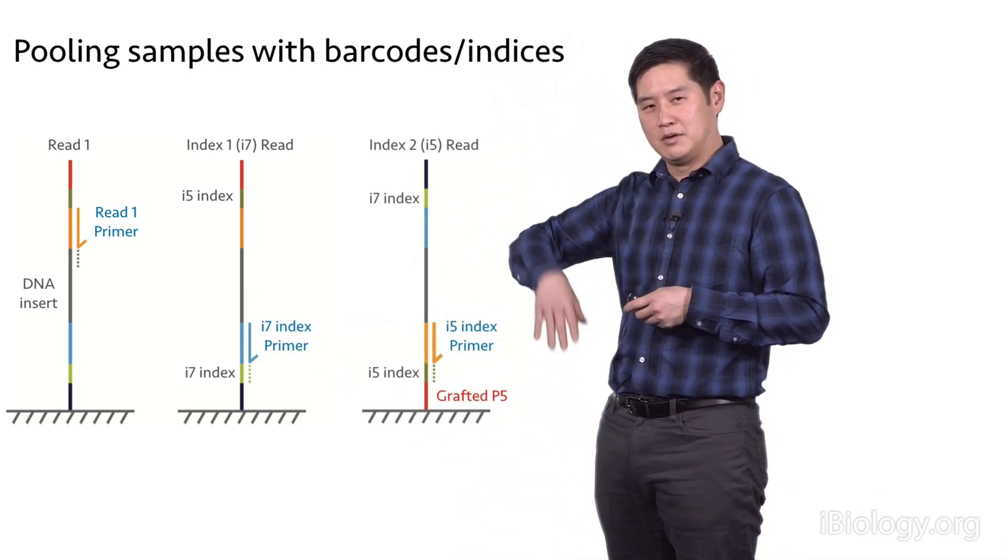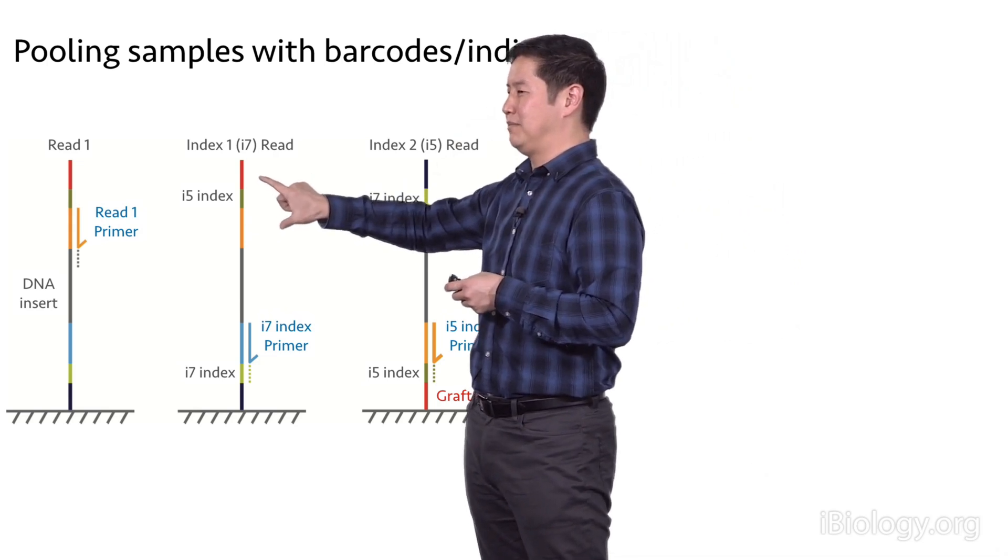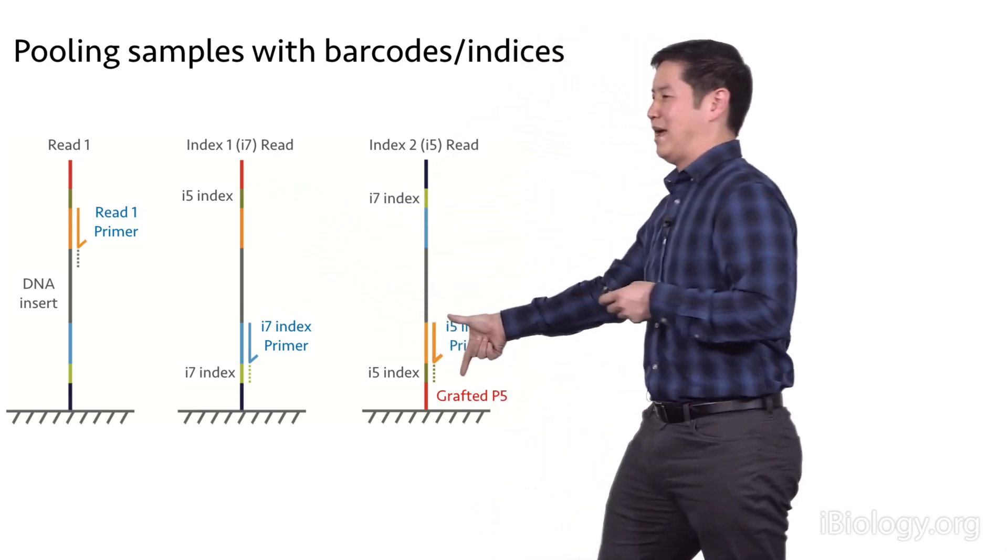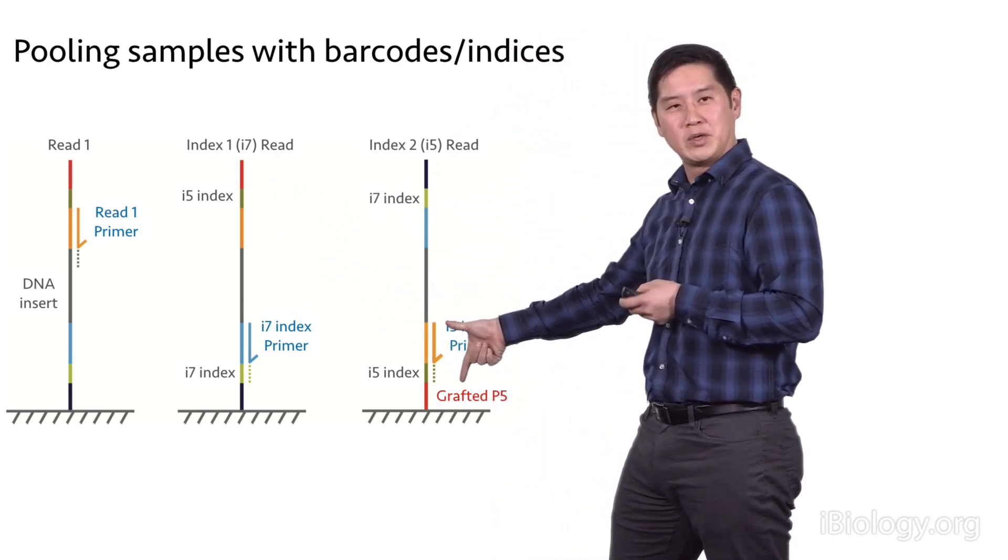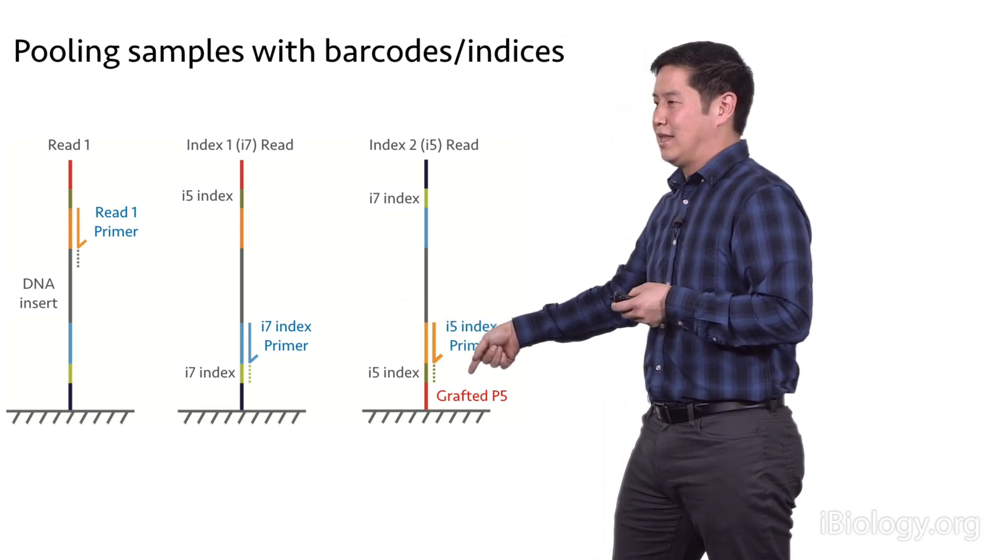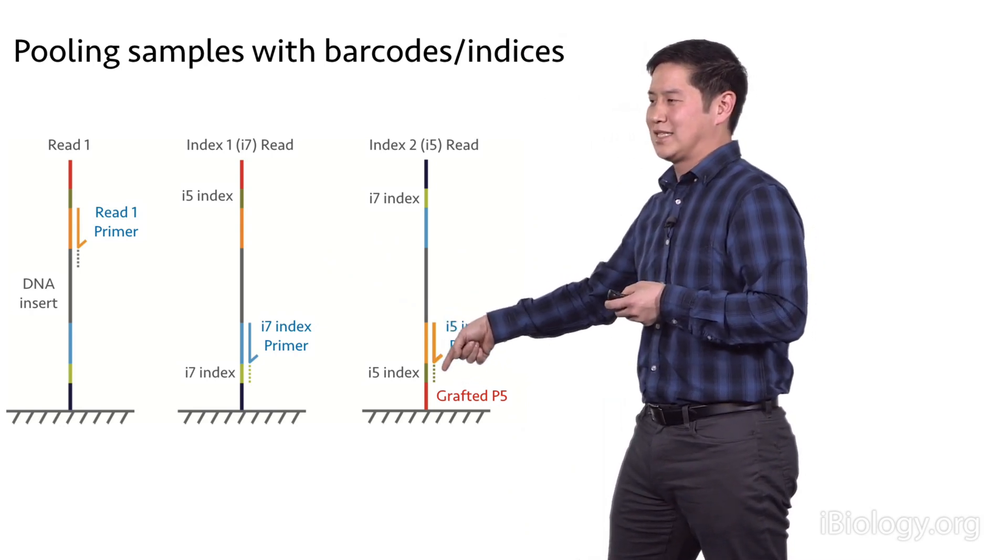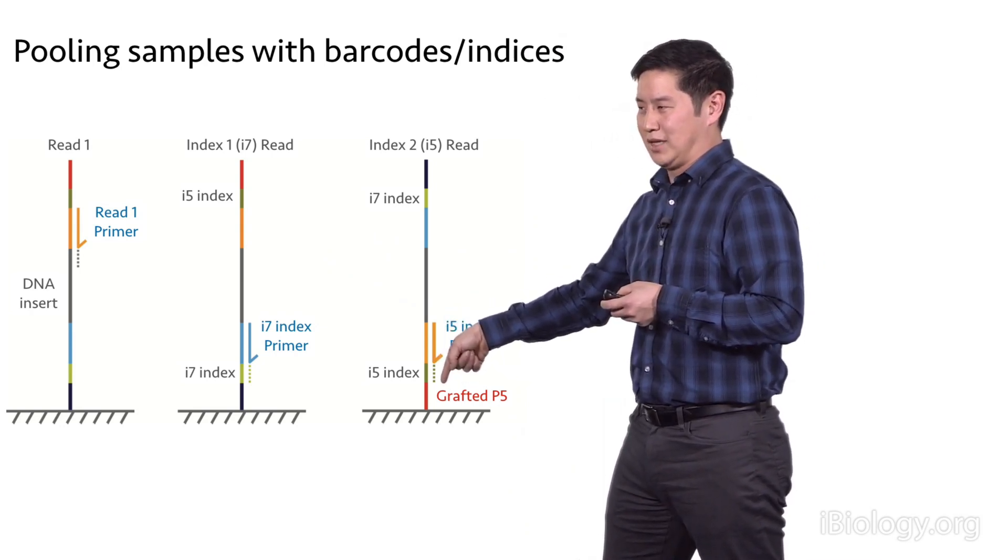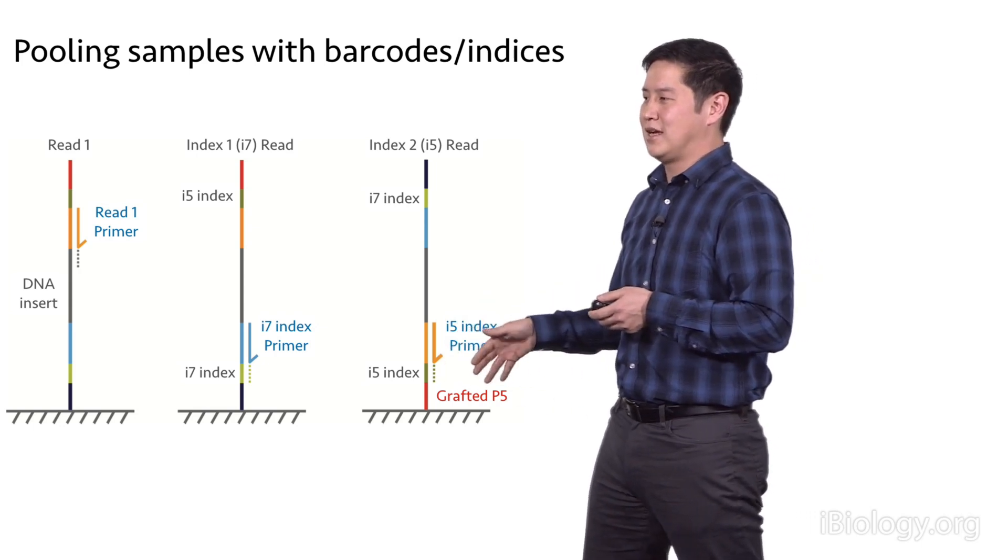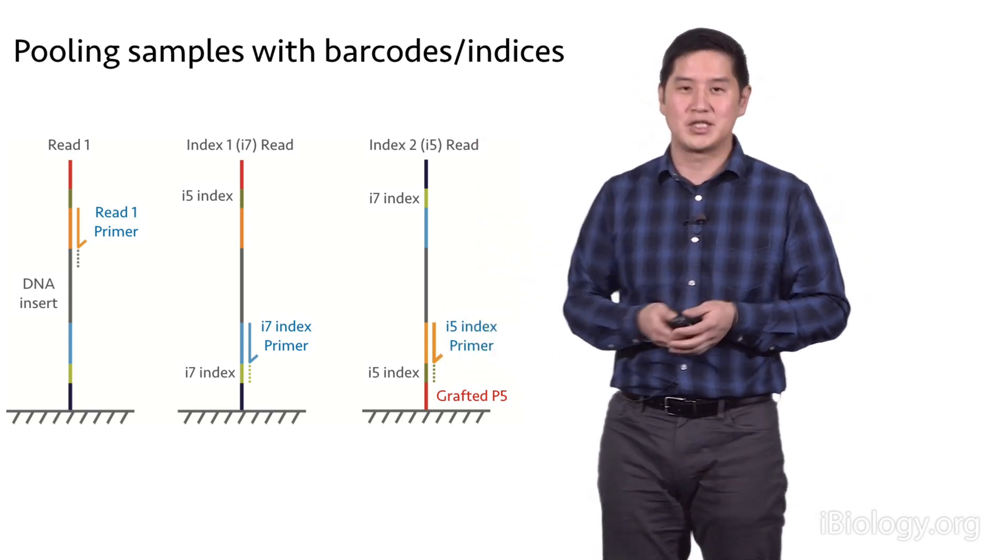Next, you flip the templates around so that this template becomes flipped and then bound onto the flow cell. You switch your orientation and then you can sequence the second index with a couple of cycles. After that's done,